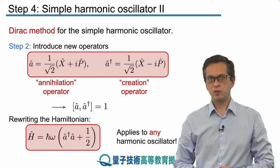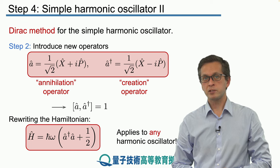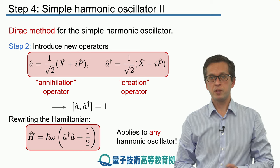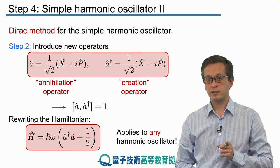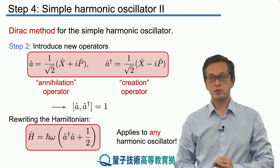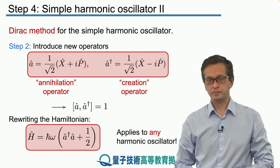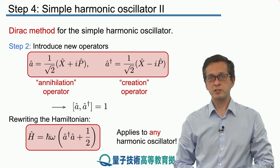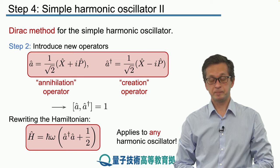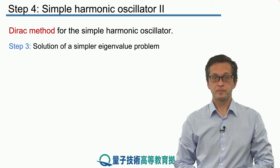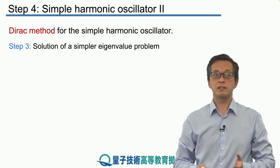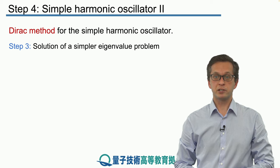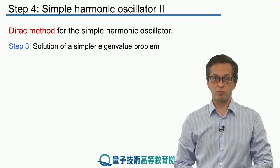This form of the Hamiltonian applies to any harmonic oscillator. We started with a harmonic oscillator of mass m, but in fact this form applies to any, as we will see in the final step of this lesson. So, step three: let's solve our initial eigenvalue problem.